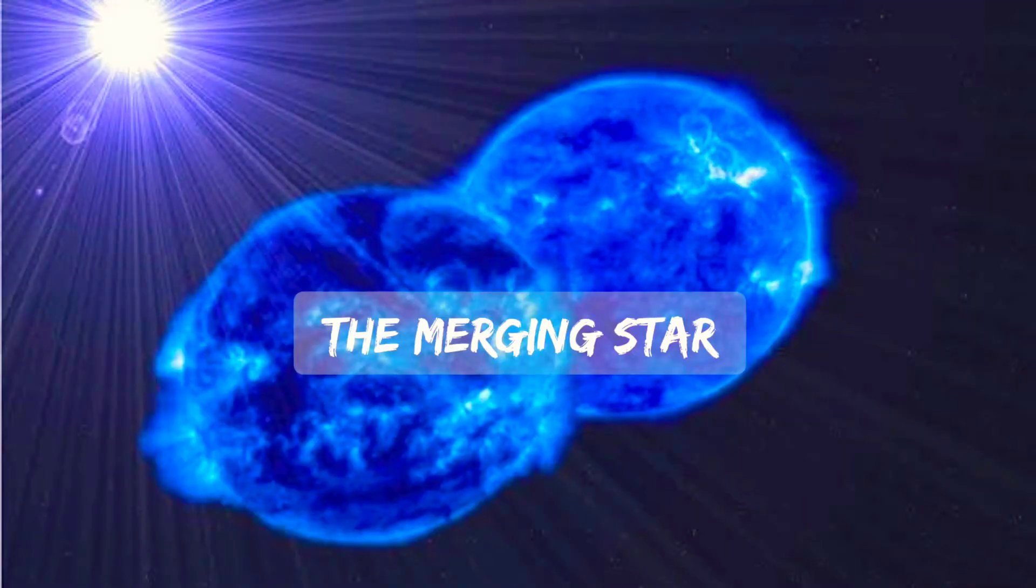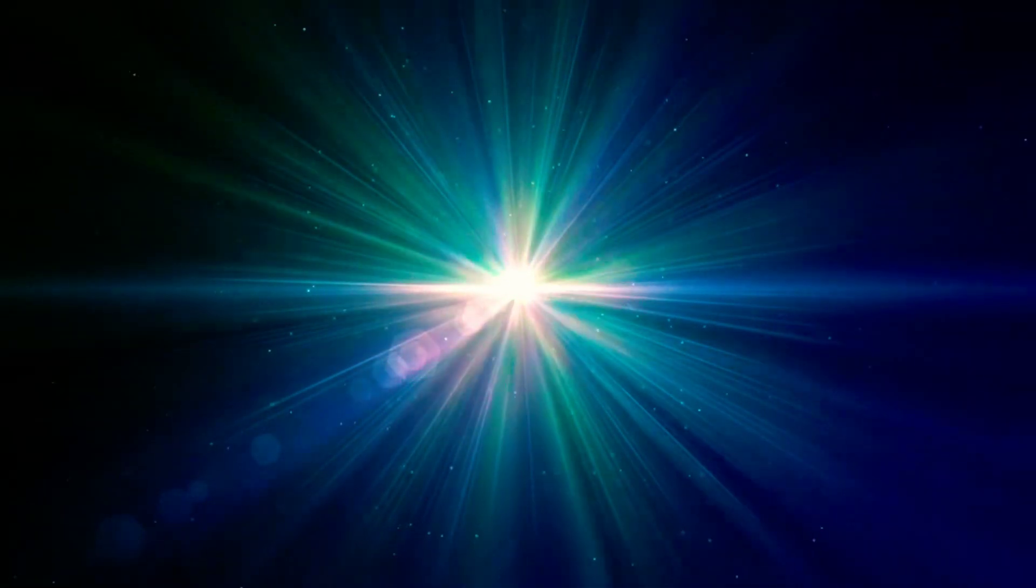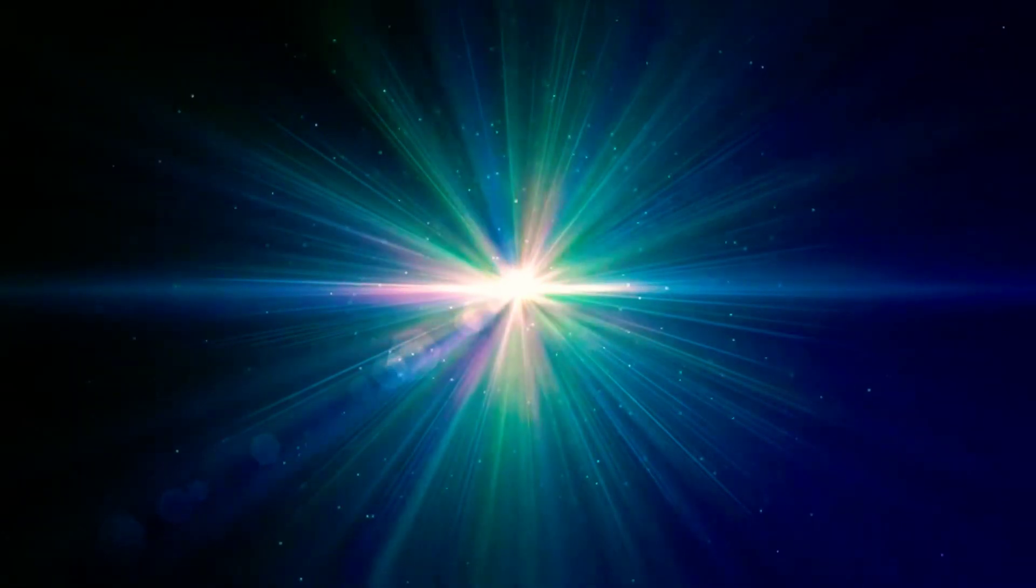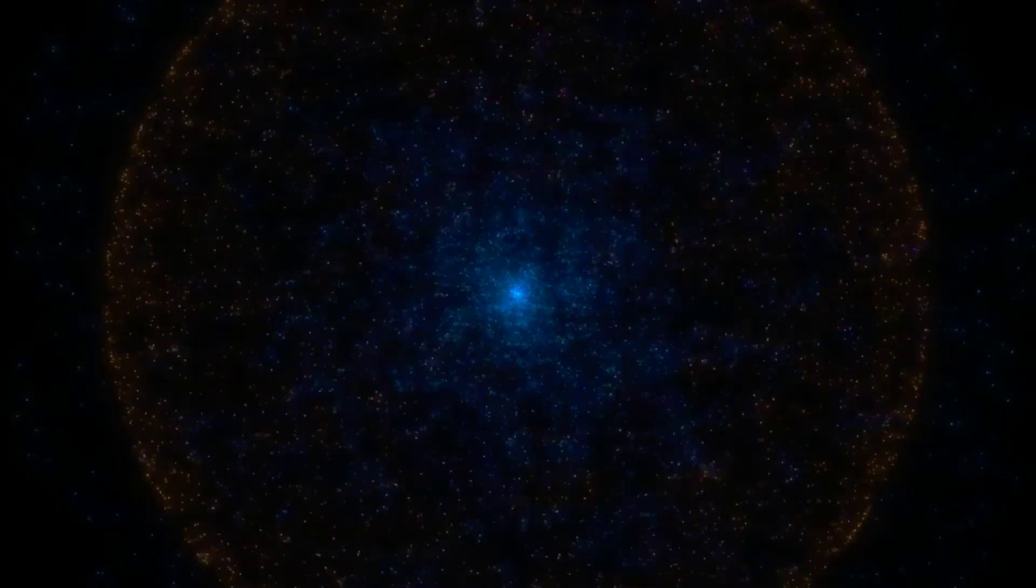MY Camelopardalis. Camelopardalis appears to be a fairly common or garden variable star, but on closer inspection astronomers concluded it was a binary pair. The two stars are orbiting each other at over a million kilometers per hour, and they are so close that their atmospheres are beginning to interact.